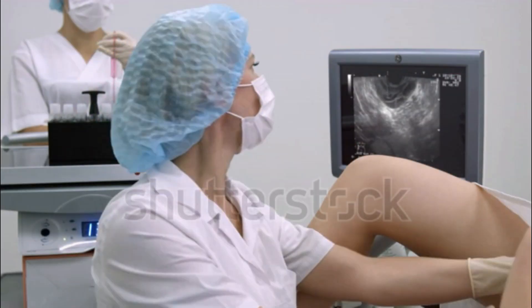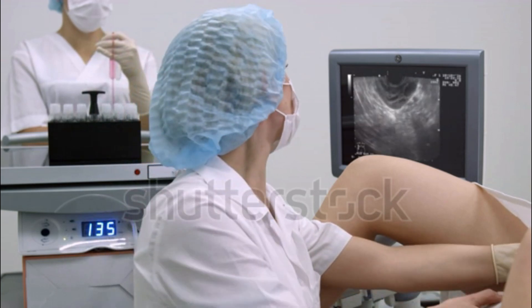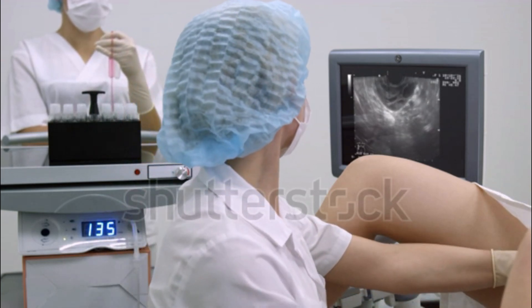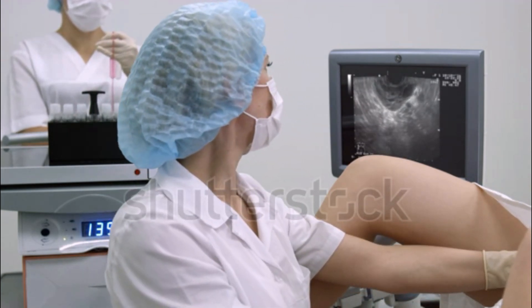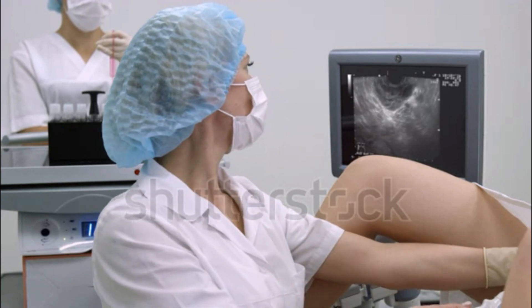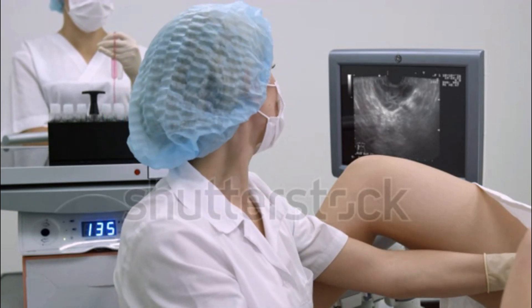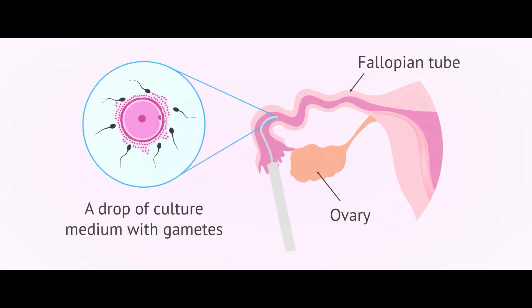Step 2: A laparoscope is used to remove the egg from the ovary. Step 3: When the egg is taken out, the man provides a sperm sample. Step 4: The eggs and sperm are mixed in a catheter. Step 5: The mixed sperm and egg will then be put into the fallopian tube through a catheter.